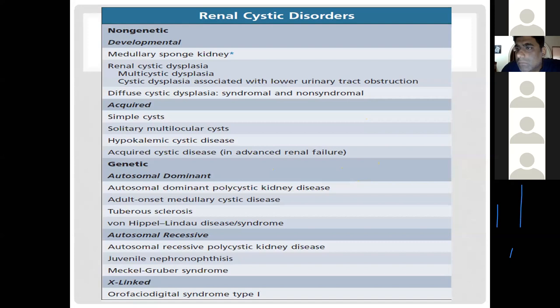X-linked disorders are those in which the defective gene is located on the X chromosome; males are usually affected. Among genetic disorders, autosomal dominant polycystic kidney disease is the most common disorder discussed in the context of cystic disorders of the kidneys, followed by other less common diseases.